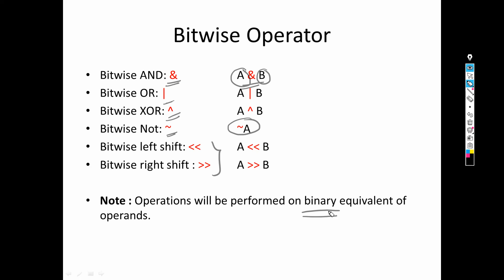What do we mean by binary equivalent of the operands? Suppose we write 10 and 5 — both are decimal, but the operation will not be performed directly on 10 and 5. It is performed on the binary equivalent of 10 and 5. How that is done, we will discuss during the example.